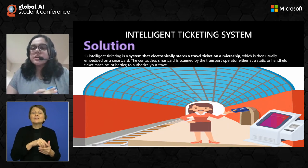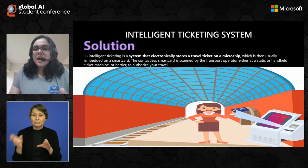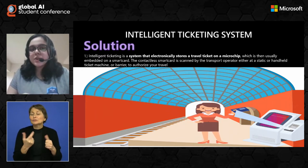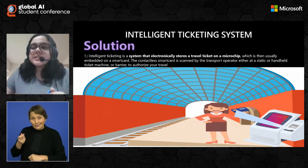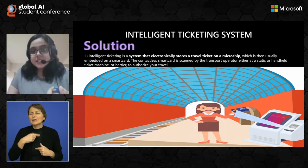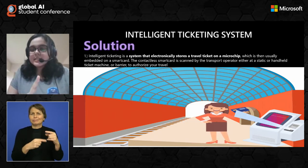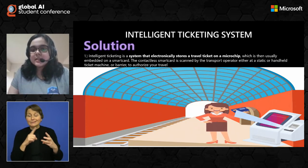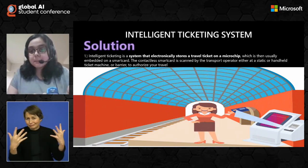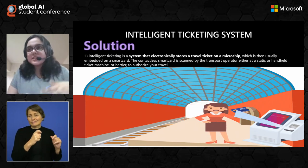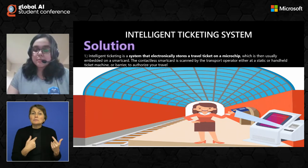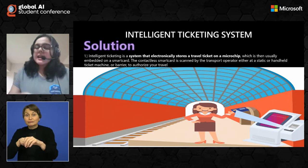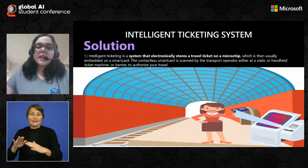The contactless smart card is scanned by a transport operator — in this case a kiosk — which could serve as either a static or handheld ticket machine or a barrier that authorizes your travel. Inside the smart card are all your tickets: bus tickets, metro tickets, train tickets, and tram tickets, and the kiosk reads all the data off them. It then has the passenger's complete details regarding travel, and can find out from where to deduct the prices of travel, add any fines, and handle all other features associated with travel.